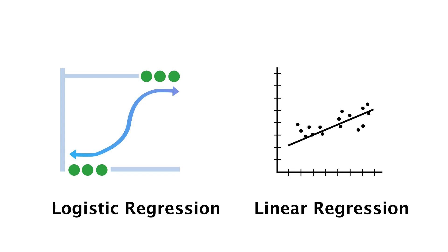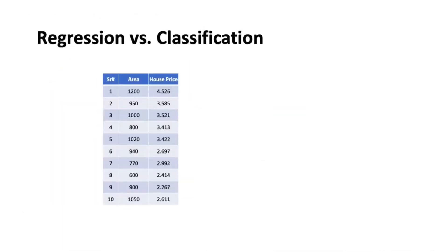When you've given a value prediction problem, you'll be able to apply linear regression. When you're given a classification problem, you'll be able to apply logistic regression. Let's understand the difference.